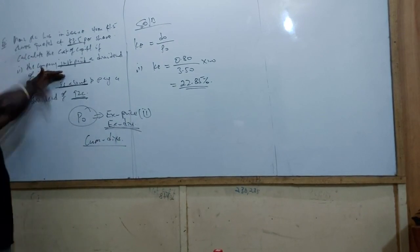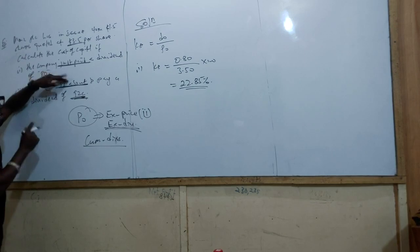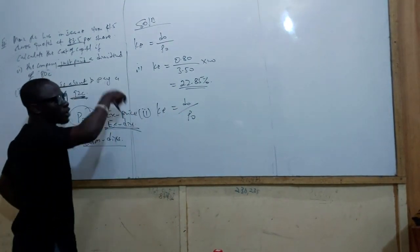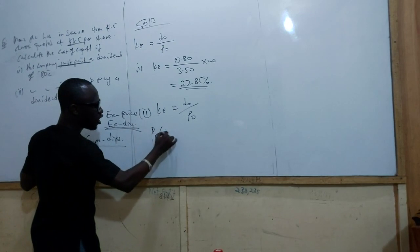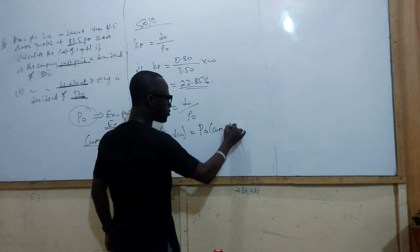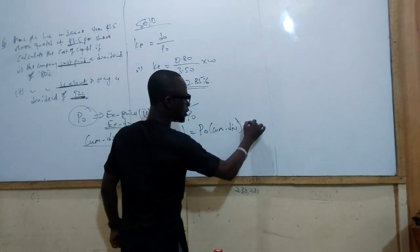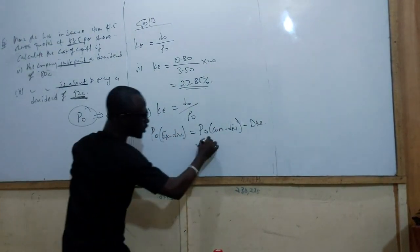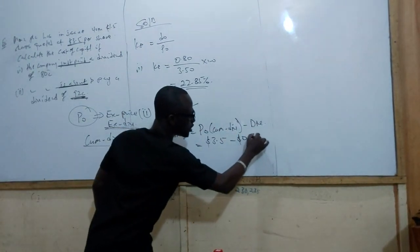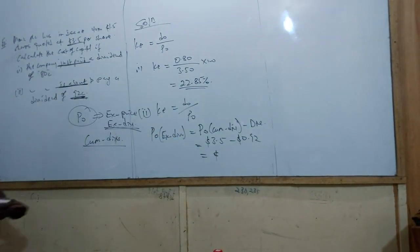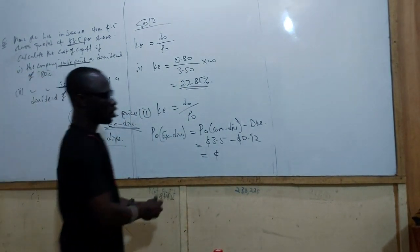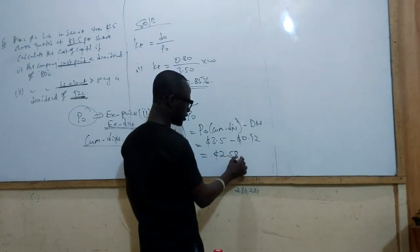Since we always need KE equals D0 over P0 and P0 must be the ex-dividend price, we calculate: P0 ex-div equals P0 cum-div minus the dividend. So P0 cum-div is $3.5, and the dividend about to be paid is $0.92. Therefore P0 ex-div equals $3.5 minus $0.92, which gives $2.58.